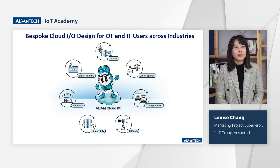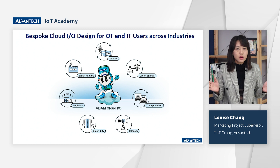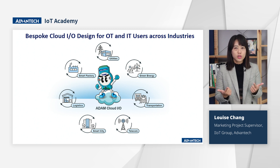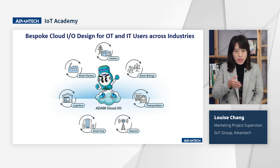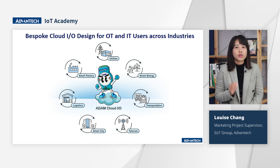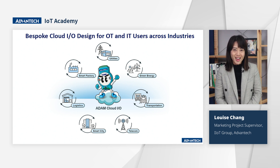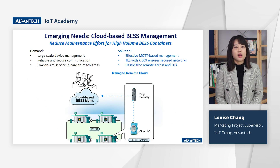In today's IoT era, our goal is to manage an extensive array of assets across various applications including infrastructure, logistics, energy infrastructure, transportation, utility, and smart cities — utilizing MQTT-based device management, security, OTA, and remote access. This represents a growing opportunity for expanding ADAN Cloud I.O. solutions. We will use four industrial applications to demonstrate how ADAN Cloud I.O. can be applied. The first application is about battery energy storage systems (BESS), which comprise high-volume containers situated at a remote site near a substation.